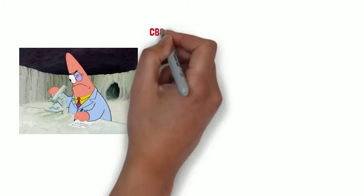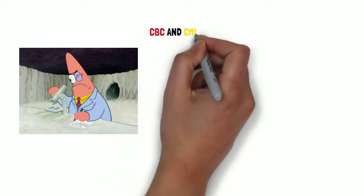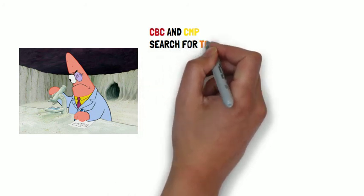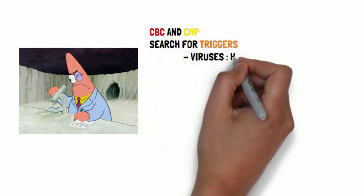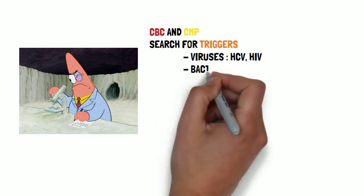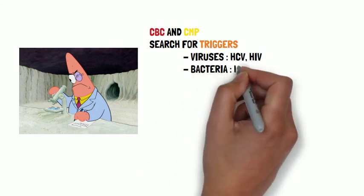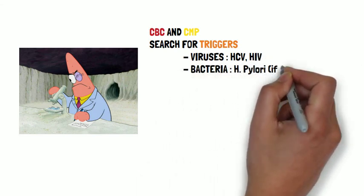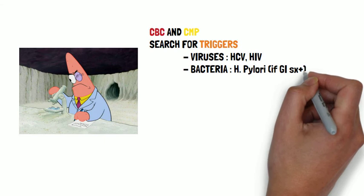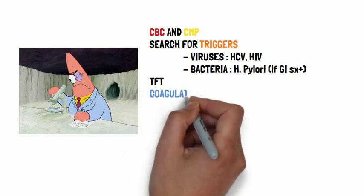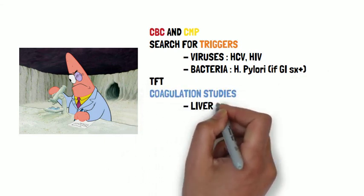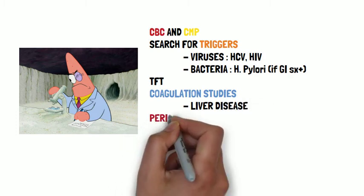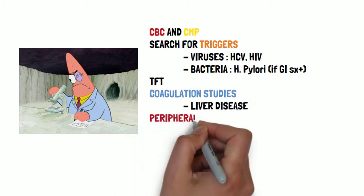Now let's talk about investigations. CBC and CMP must be performed. In addition, presence of triggers must be evaluated. HIV and HCV testing are mandatory. H. pylori testing must be performed in patients with GI symptoms. Thyroid function testing may be performed as there are rare reports of ITP associated with thyroid disorders.